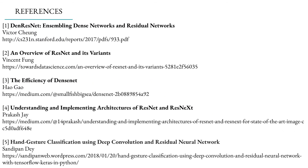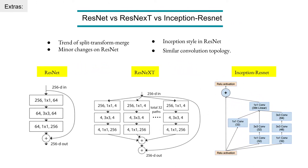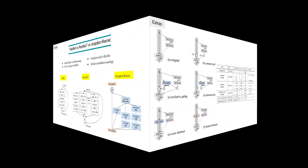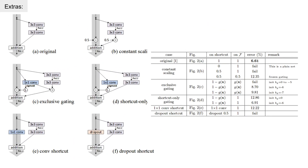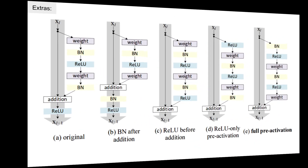There are several variants: ResNet, ResNeXt, Inception-ResNet, and others. In the original paper they tried many different paths - adding paths, removing them - to find the optimum architecture. They used both identity paths and sometimes added convolutions to the identity path, applying both approaches in the original paper.